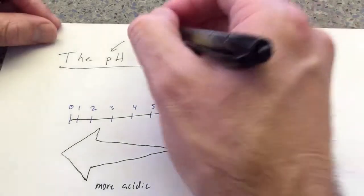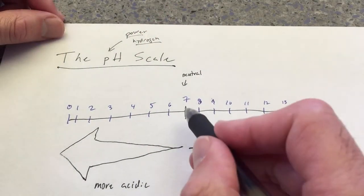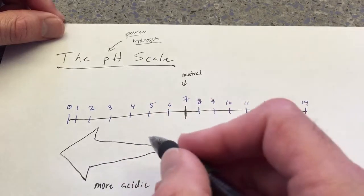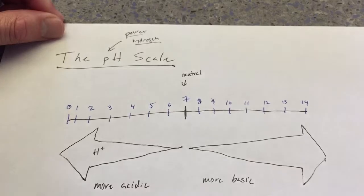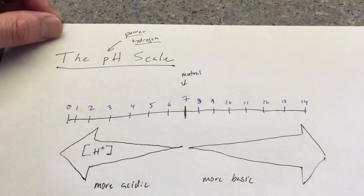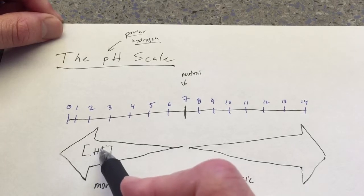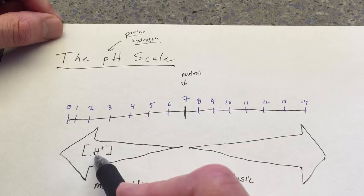Now we say that pH stands for the power of hydrogen. What does this mean? That as we go from 7 out towards 0, we increase in the concentration of hydrogen ions. So when I draw an H+, that is a hydrogen ion, or in other words,